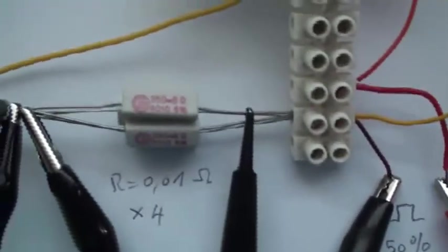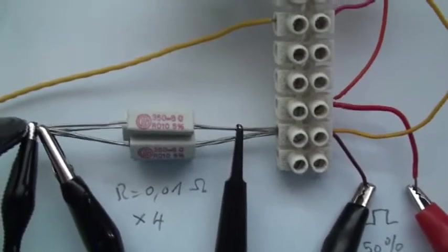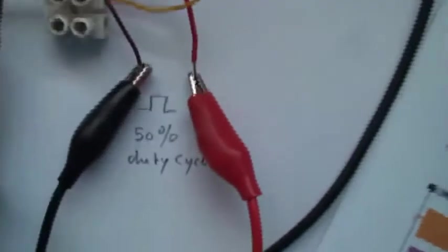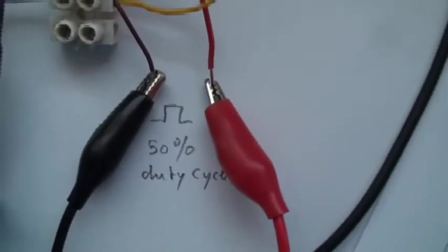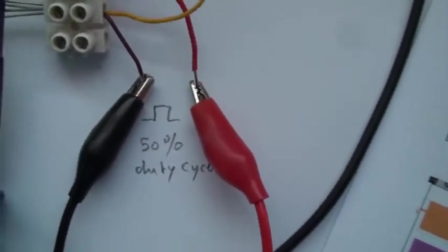I have put here four small 0.01 ohm resistors. I will put with my signal generator 50% duty cycle square wave.